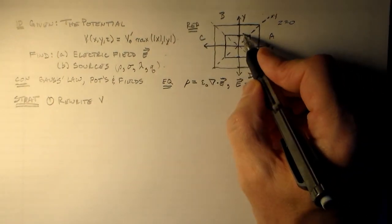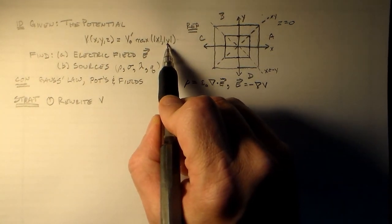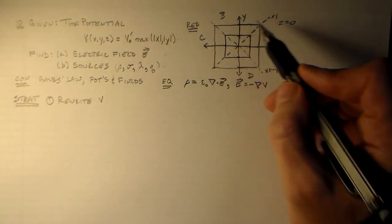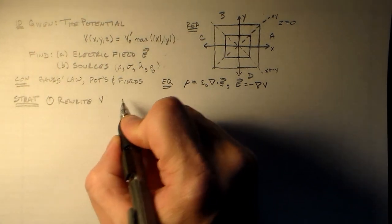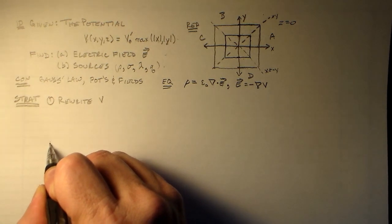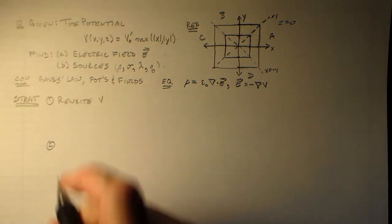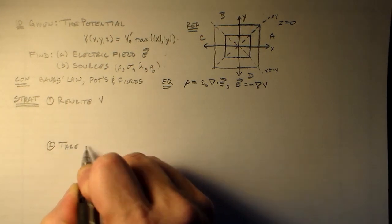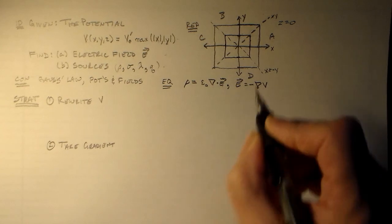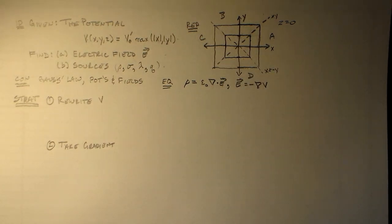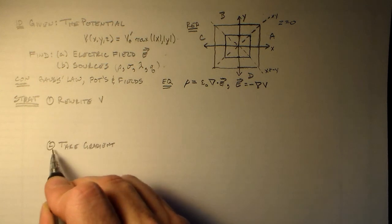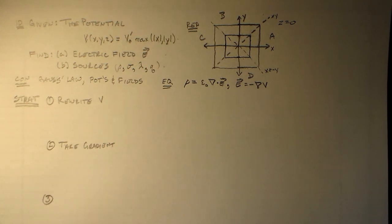For this you can write that potential function really easily — you just look at it and you know exactly what you're doing. You say: okay, here the only thing that matters is Y, so we have V₀ prime Y, because in this quadrant Y is always greater than X. We just rewrite that and we're good to go. Then we take the gradient. We take the gradient in each one of those separate places and use that to find our field. Finally, go ahead and take our divergence and do our Gauss's law.